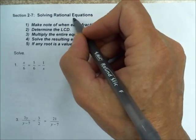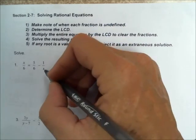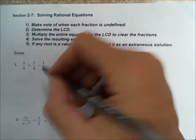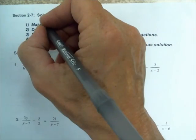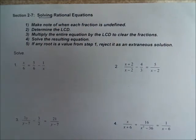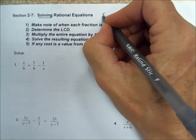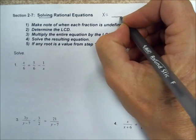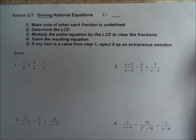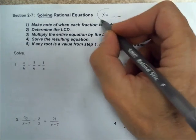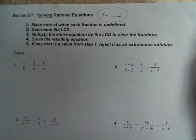Rational equations are equations with fractions with the denominator having the variable in it. So when we have to solve a rational equation, we want to know in the end what x is equal to. It's going to be equal to one or two numbers, or maybe it's not even going to be equal to anything because we'll just have an extraneous solution. But remember, when you're solving an equation, in the end, please tell what x is equal to.